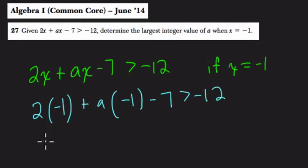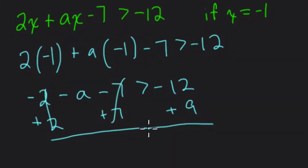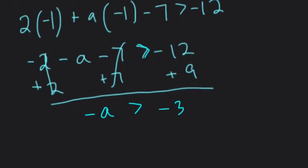So 2 times negative 1 is negative 2. a times negative 1 is negative a, so I put minus a, minus 7, greater than negative 12. To isolate a, I'm going to add 2 and add 7 over here. In other words, I'm going to add 9. So now if we add negative 12 plus 9 is negative 3, we have negative a over here, and they're not equal. This is an inequality, so negative a is greater than negative 3.